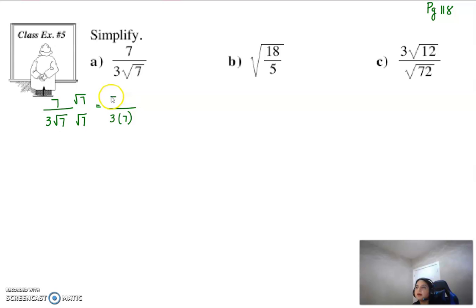In the numerator, we have seven root seven. Now this will end up becoming seven over 21, or you can just reduce the seven and seven right away. Either way, whichever way you like to do this, you know that this will end up becoming one over three root seven. So one way is to look at your monomial and only multiply with the radical part.